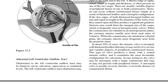Stenosis may result from the unequal size of the cusps, which is frequently seen in bicuspid aortic valves. When the commissures are situated in an anterior-posterior plane, the coronary arteries usually arise from each sinus of Valsalva. When the commissures are situated in a frontal plane, the coronary arteries more frequently arise from the posterior sinus.